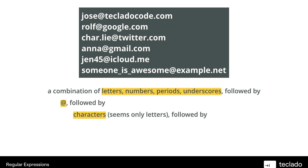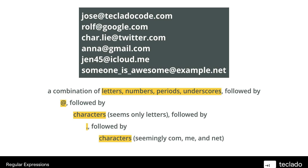That's always followed by some characters, and it seems those characters are always letters — like cloudofcode, Google, Twitter, Gmail, iCloud. Those are followed by a dot, a period. And finally you have some characters — from this example they appear to always be com, me, or net, giving you .com, .me, or .net. But of course we can be smart and say it's possible that if we're looking at emails, the characters at the end may be slightly different in some cases. Maybe let's say they can be any character.